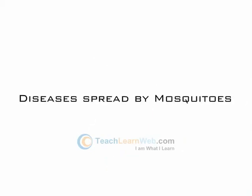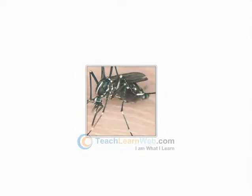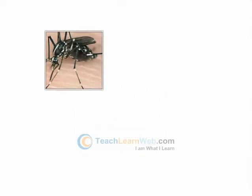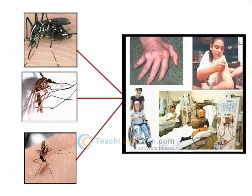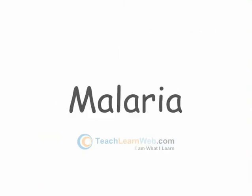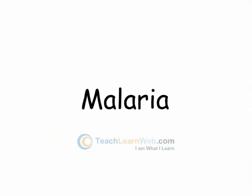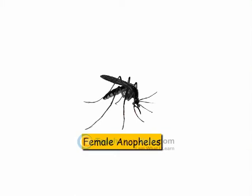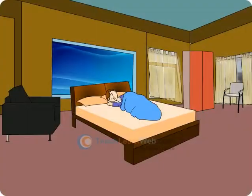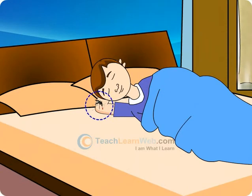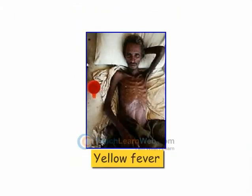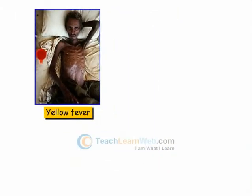Diseases spread by mosquitoes. Different types of mosquitoes cause different diseases in humans. Malaria — the female Anopheles mosquito introduces the malaria parasite into the human body. Yellow fever and dengue.